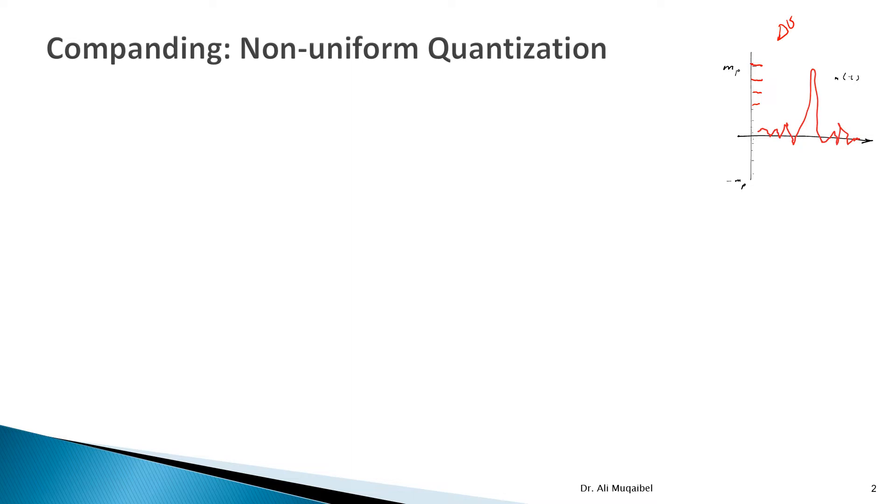Now we need to notice a few things here. The first thing is statistically for voice applications, most of the time the signal has small amplitudes and low signal-to-noise ratio. As you can see here in the example, the red signal, most of the time we're speaking softly, all of a sudden we shout, and then we go back to our normal voice. So we're saying here statistically for voice application, most of the time the signal has small amplitude. So those levels are not utilized. We're only focusing on the small levels.